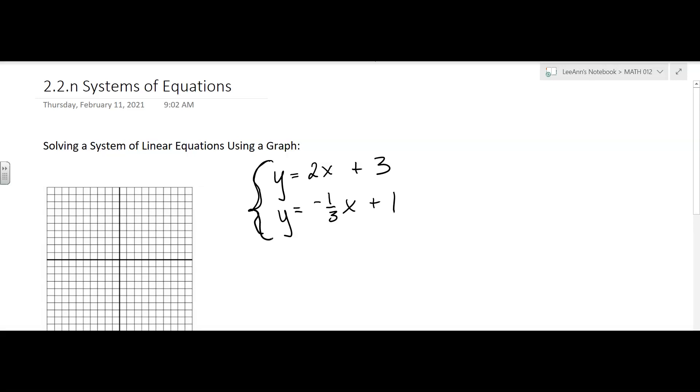So one of the methods we have to solve them is the graphing method. That's what we've been working on in this section, so we're going to use that. I'm going to graph the top line. It has an intercept of 3, a y-intercept, and then a slope of 2. So it looks like that line is going something like that.